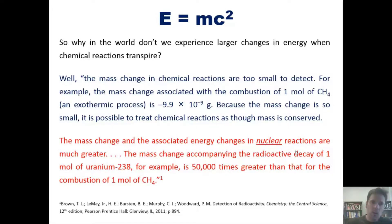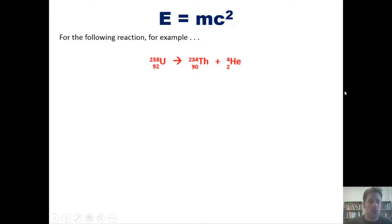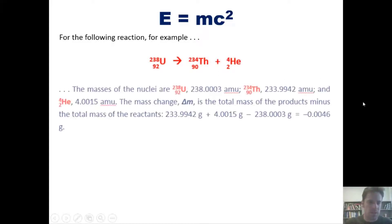For the following equation, the alpha decay of uranium-238 to thorium-234, for instance, the mass of the nuclei are: uranium-238 being 238.0003 amu, thorium-234 being 233.9942 amu, and helium-4, the alpha particle, being 4.0015 amu. The mass change, or delta m, is the total mass of the products minus the total mass of reactants. That comes to be equal to negative 0.0046 amu. So that's an actual measurable mass change, and although that still seems small, it's large enough you could measure it on a scale in the lab.